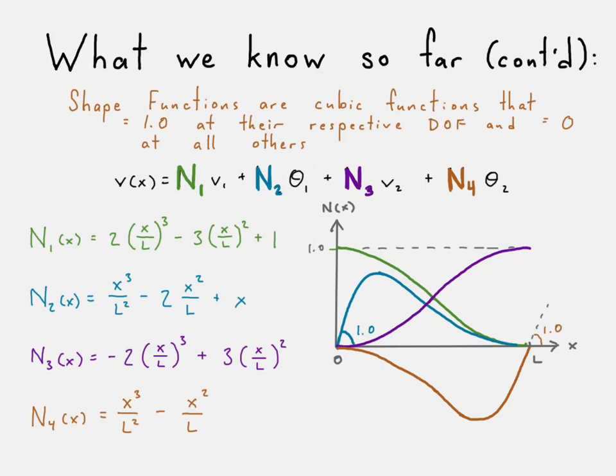We use this form for our displacement function because it's a way to use superposition essentially to describe the influence that each of the nodal displacements, v1 and v2, and nodal rotations, theta 1 and theta 2, have on the overall displacement throughout that element.